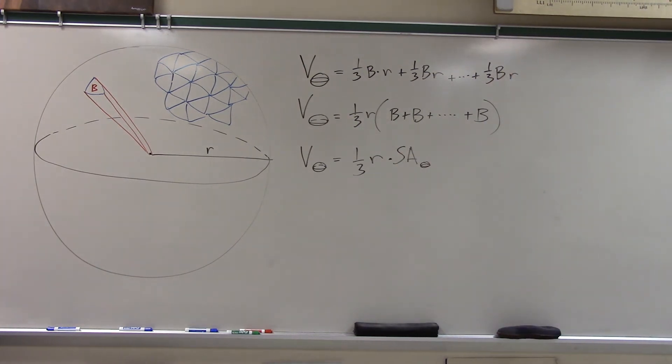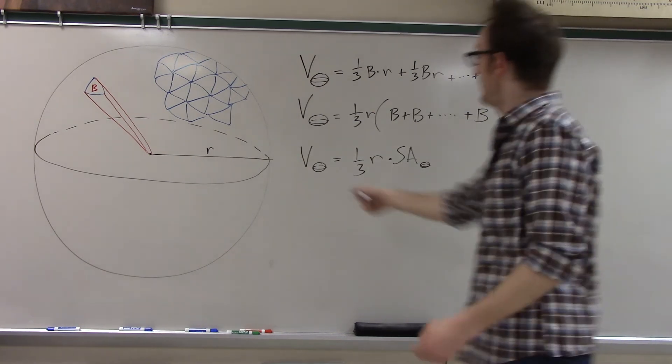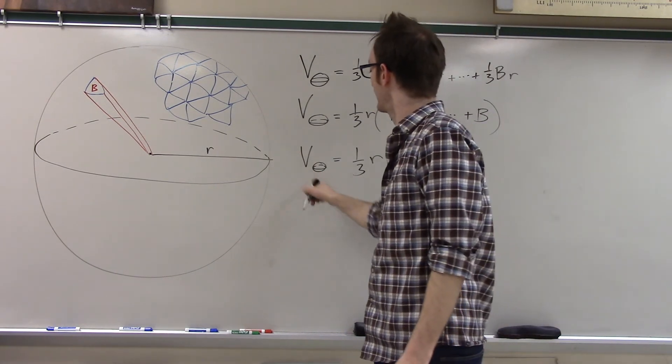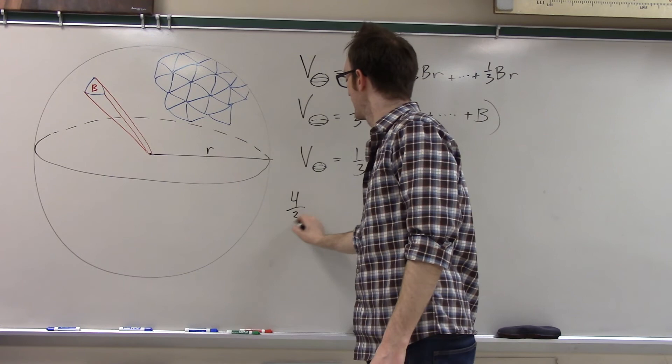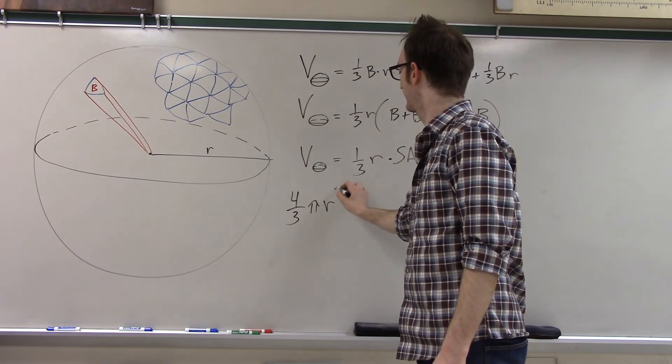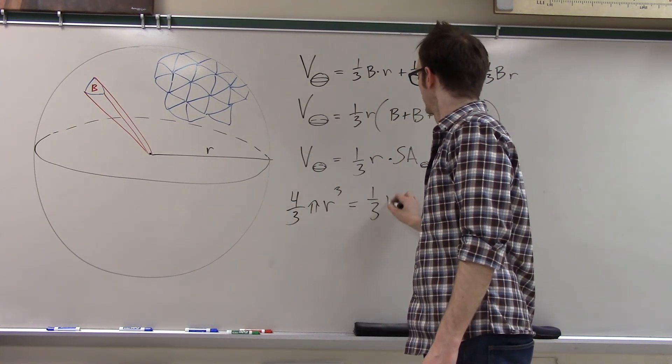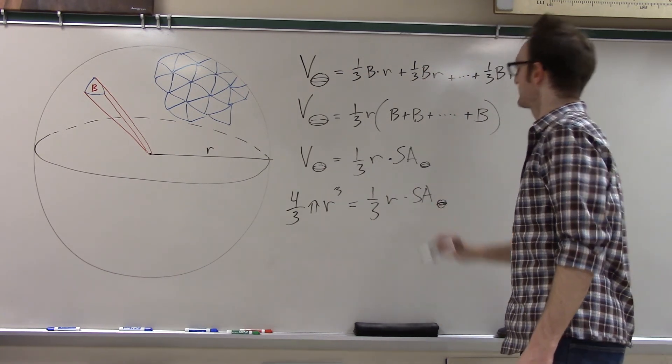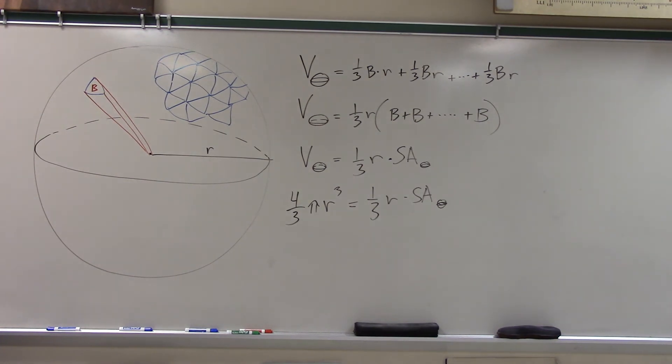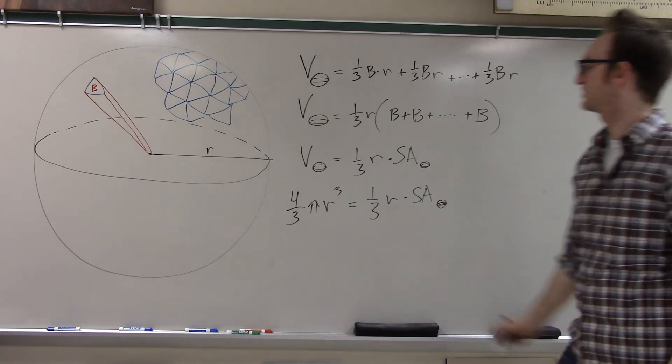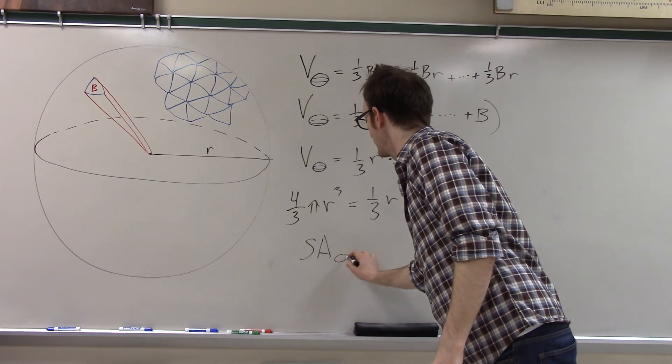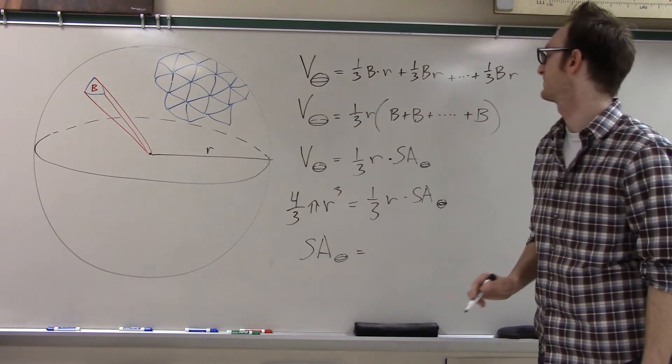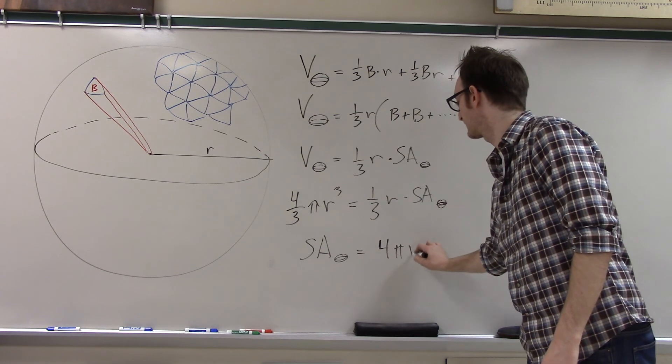This is kind of incredible. And, well, I know the volume of the sphere because we did that a half an hour ago. The volume of the sphere is four-thirds pi r cubed. And so, as the volume of the sphere is four-thirds pi r cubed, and the volume of the sphere is also one-third r times the surface area of the sphere, multiply both sides by r, multiply both sides by 3, and I get that the surface area of the sphere is four pi r squared.